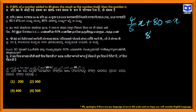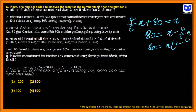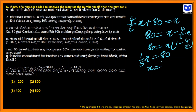So we write: 80 equals x minus 4 by 5 x. That gives 80 equals 1 minus 4 by 5, then x equals 1 by 5 x. So 1 by 5 x equals 80, and x equals 400.